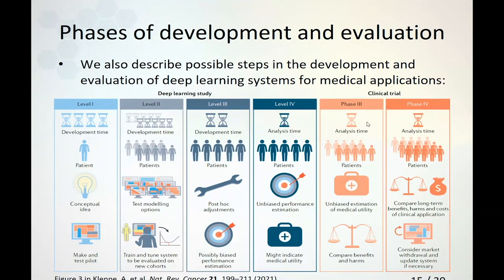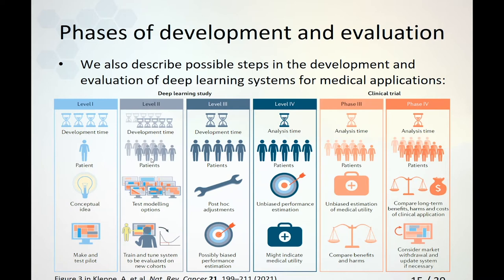We also described possible steps in the development of deep learning systems. One usually starts with an idea, does initial pilot testing to determine how to proceed, and then in level 2 studies — where machine learners spend most of their time — tests all different modeling options and tries to gather as many patients or subjects as possible to increase the training dataset, concluding with a system expected to work in other settings. But at that point, we don't really know yet — we have some test subset performance, but is it representative?